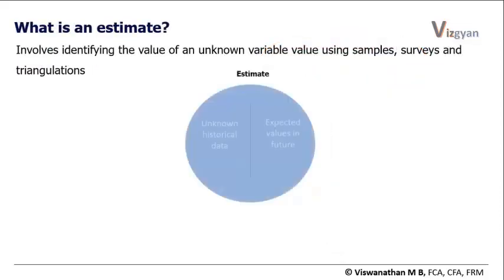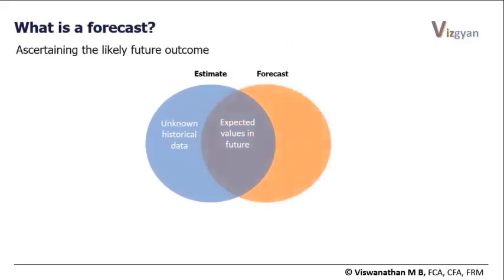Estimation can be for historical data as well as for future data. For example, the statistics department of a government tries to figure out how much inflation was in the previous month using samples and surveys. Similarly, if a company experiences fire accidents in its stores, it may use estimation techniques to ascertain the losses. As far as future data is concerned, the earlier example could be very apt. When we use estimation techniques to ascertain what can happen in future, what we are doing is also a forecast.